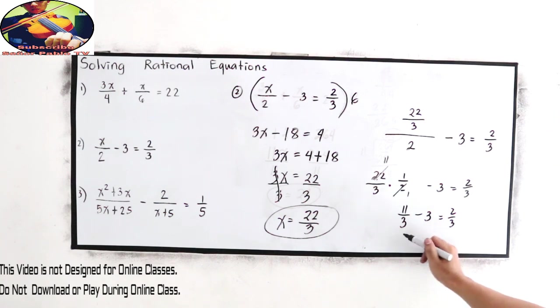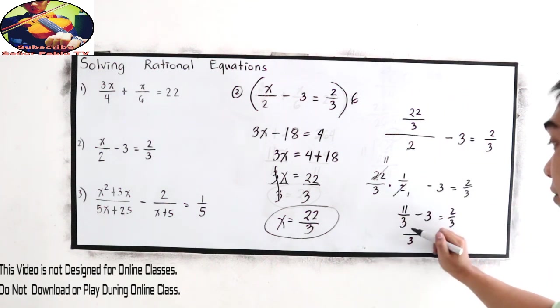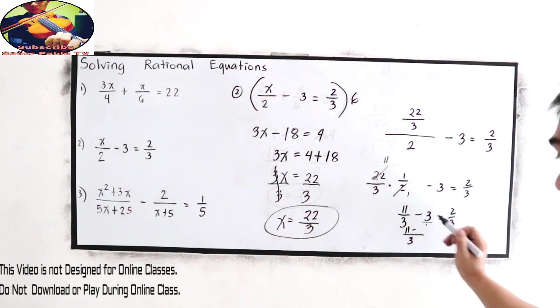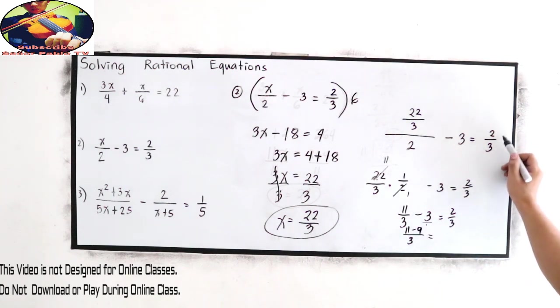So we have to find the LCD. The LCD is 3. 3 divided by 3, that is 1 times 11 is 11. Copy minus sign. 3 divided by 1, we know the denominator of a whole number is 1. 3 divided by 1, that is 3 times 3, gives us 9.